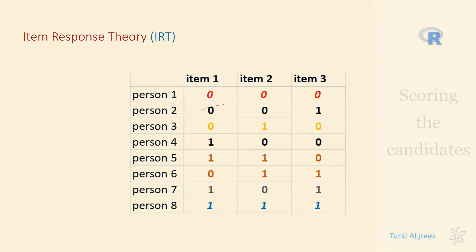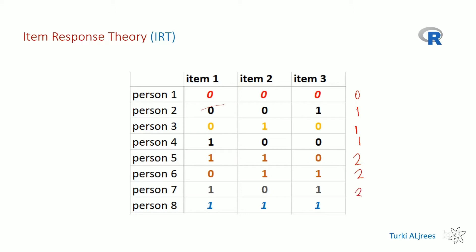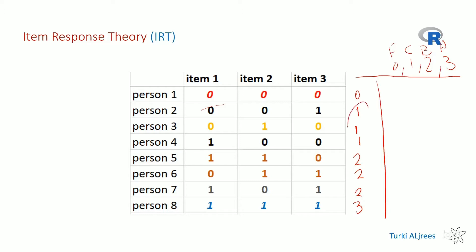If someone answers zero-zero we give them zero; zero-zero-one gives them one. So the total score can be zero, one, two, or three. We assign grades: three is A, two is B, one is C, zero is fail. The students with the same total score will get the same grade, regardless of which items they answered correctly.